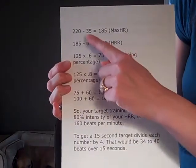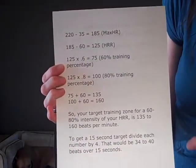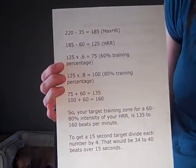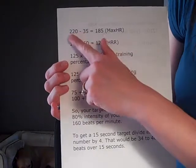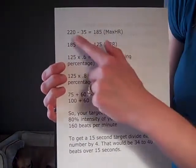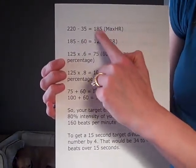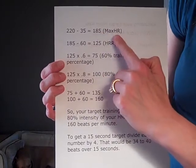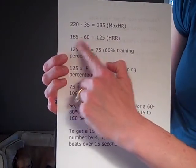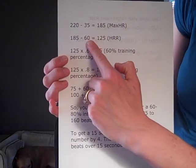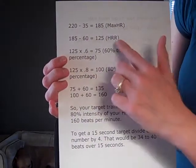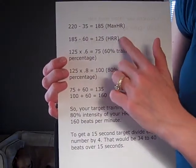If we're looking at someone who's a 35-year-old male, we're going to take 220 minus 35. If it's a female, we'd take 226 minus 35, but we're going to pretend it's a male today. The resulting number gives our max heart rate. We then take our max heart rate and subtract 60, which is our resting heart rate, giving us 125, which is our heart rate reserve.